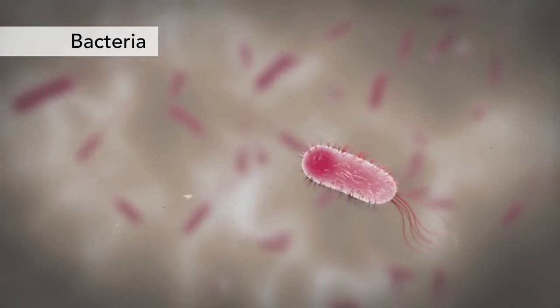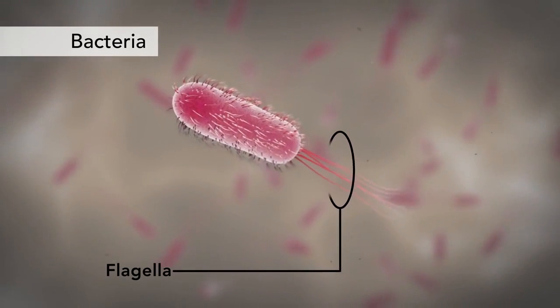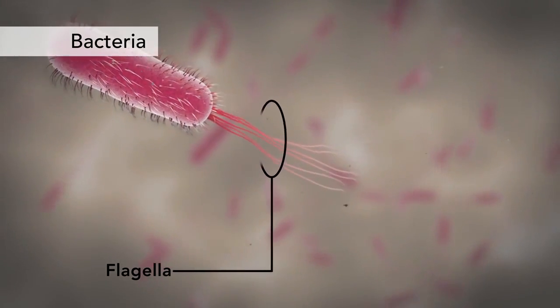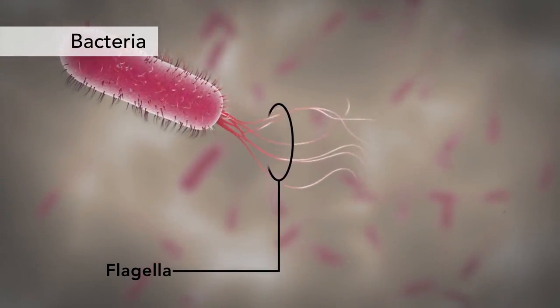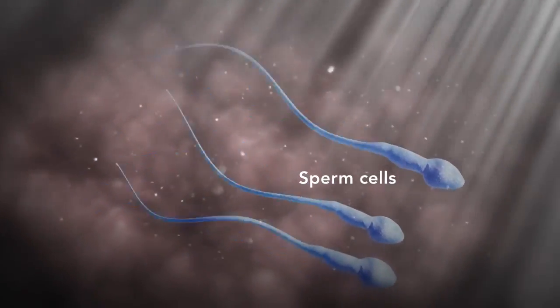Another unique feature in some cells is flagella. Some bacteria have flagella. A flagellum is like a little tail that can help a cell move or propel itself. The only human cell that has a flagellum is a sperm cell.